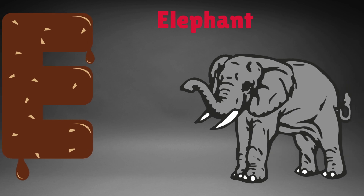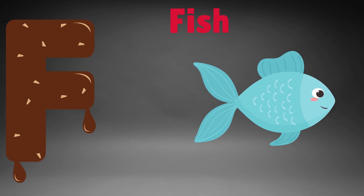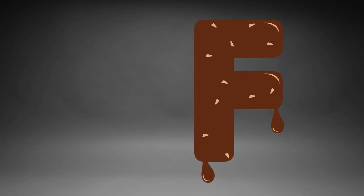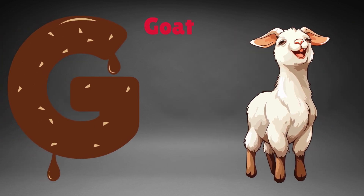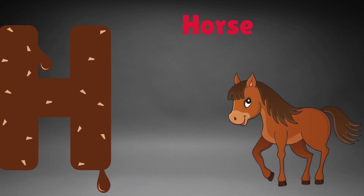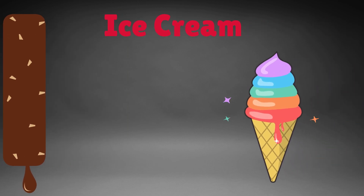E is for elephant, e-e-elephant. F is for fish, f-f-fish. G is for goat, g-g-goat. H is for horse, h-h-horse.